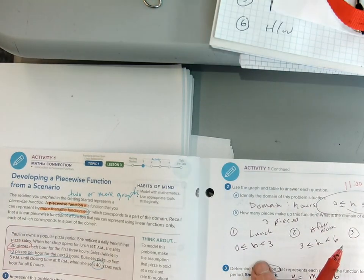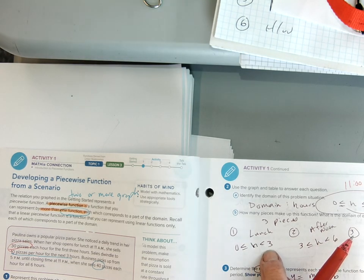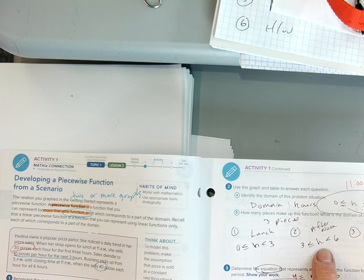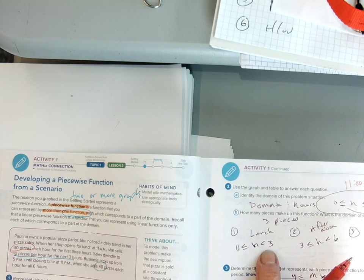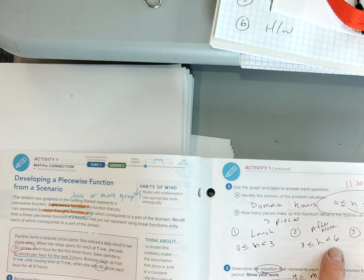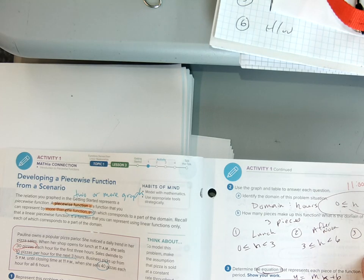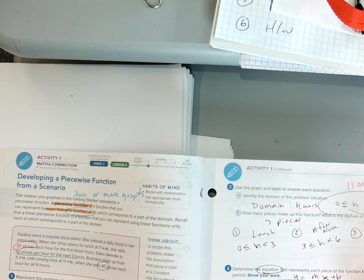So our lunch crowd goes for three hours from zero to three. And then at three o'clock, it becomes the afternoon crowd. So at three o'clock, we don't include three o'clock as the lunch crowd. But at three o'clock, we start the afternoon crowd or the lunch is over. At six o'clock, we start the dinner crowd from six to 12 hours.